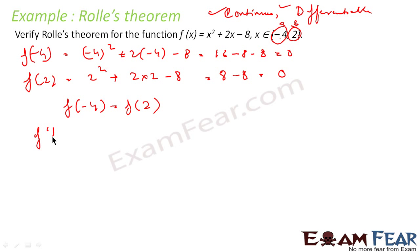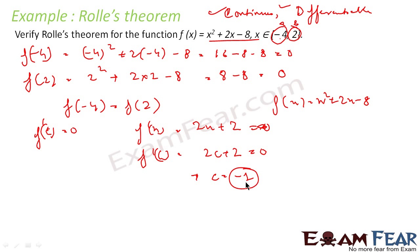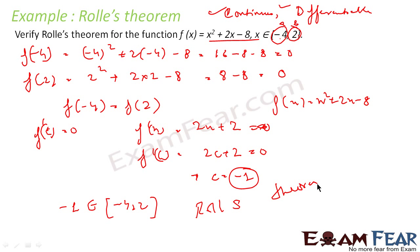Since Rolle's Theorem is applicable, there exists a c such that f'(c) = 0. Let's find f'(x): differentiating x² + 2x − 8 gives f'(x) = 2x + 2. Setting f'(c) = 0: 2c + 2 = 0, so c = −1. We check that c = −1 is a member of [−4, 2] — yes it is — so Rolle's Theorem is verified.